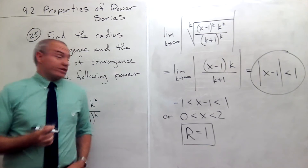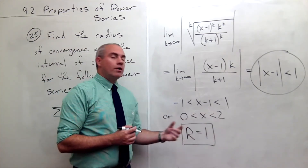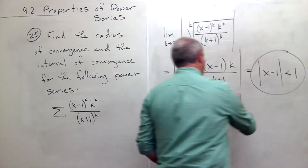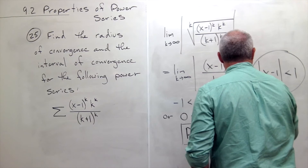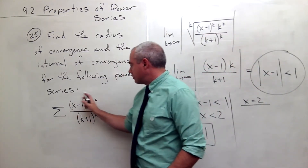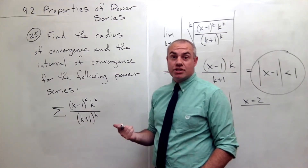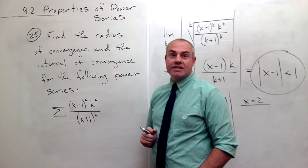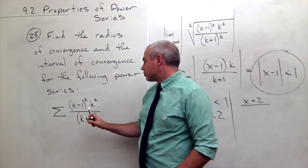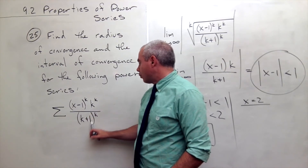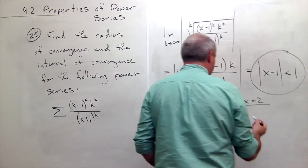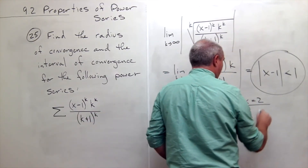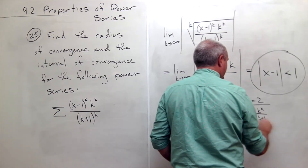If I want to know the interval of convergence, I'm very close — I have this interval 0 to 2. But what I don't know is what about the endpoints: what if x is 0 or x is 2? Let's say x is equal to 2. Going back to our original series, if x is equal to 2, then I get 2 minus 1, that's 1. What's 1 to the k? It doesn't really matter what k is — 1 to the k is just 1. So I just get k to the k over k plus 1 to the k, giving me the sum of k to the k over k plus 1 to the k.